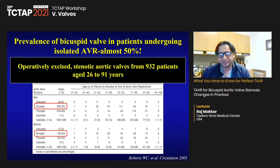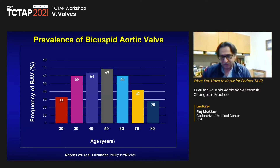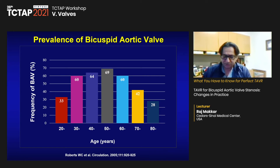This study makes the point that the prevalence of bicuspid valve in patients undergoing isolated AVR is quite substantial — almost 50% in this particular series. And especially in younger patients, almost two-thirds actually had bicuspid aortic stenosis.